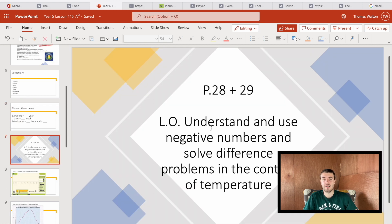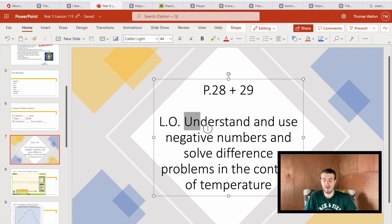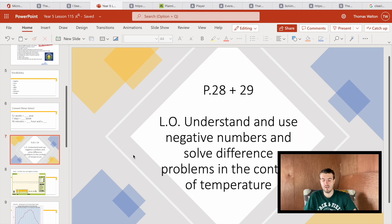So this screen is where the lesson starts for real. This is talking about our learning objectives, so I'll talk to children that we're going to understand and use negative numbers, solve different problems in the context of temperature. We'll talk about what that means and what we're going to be doing in this lesson. And then pages 28 and 29, that's where the questions are in the textbook, so the children know when we get started they know what pages to turn to.